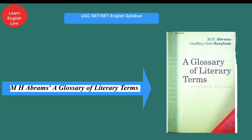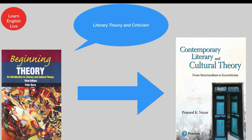The next important area is literary theory and criticism. You can start with Beginning Theory: An Introduction to Literary and Cultural Theory. Then read Contemporary Literary and Cultural Theory: From Structuralism to Ecocriticism by Pramod K. Nair, which is a must-read for UGC NET. Your entire literary theory component is covered in Pramod K. Nair's book in very easy language — you don't need to go to any other book.